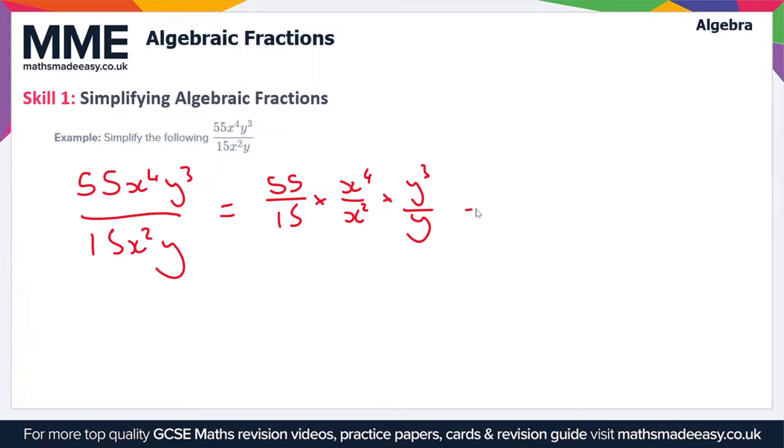55 over 15 cancels down to 11 over 3. You can just take out a factor of 5 from the numerator and the denominator, so that gives you 11 over 3 in its simplest form.